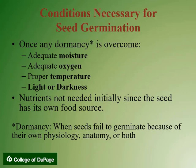There are several different conditions necessary for seed germination to occur. Once dormancy is overcome, the seed needs adequate moisture, oxygen, proper temperature, and light or darkness. Some seeds need light to germinate, while some require darkness. Nutrients are not needed during germination since the seed has its own food source. A seed will stay in dormancy when it fails to germinate because of its own physiology, anatomy, or a combination of both.